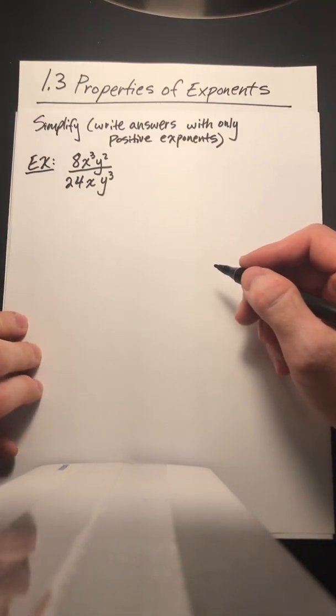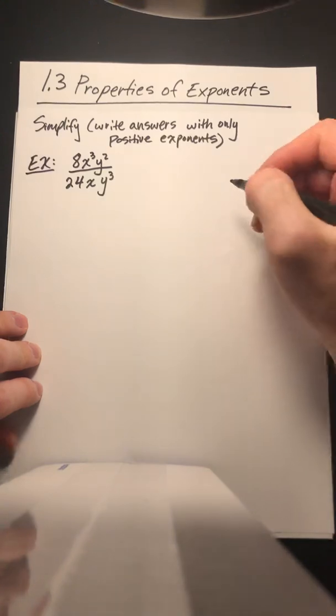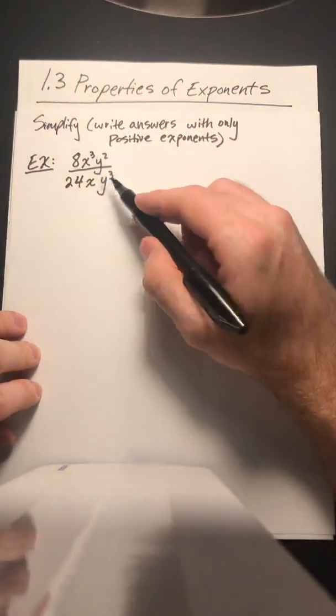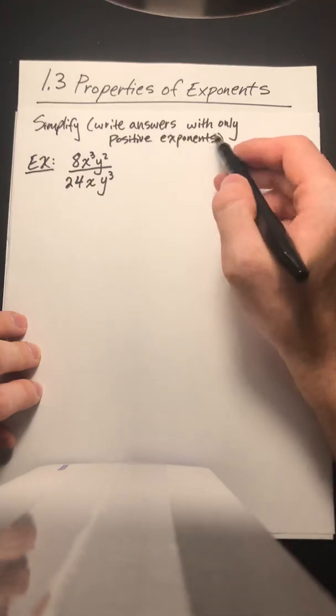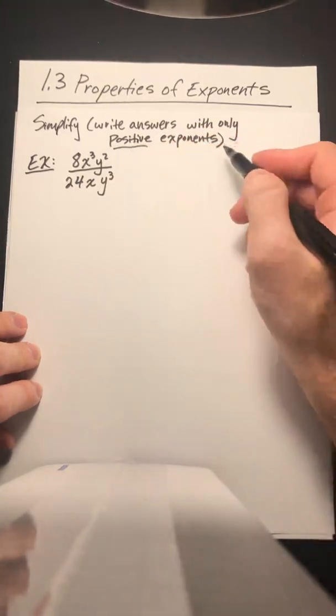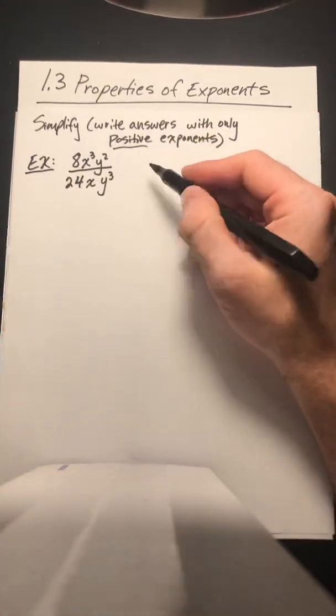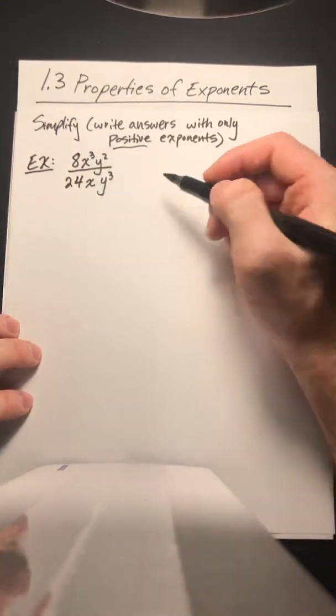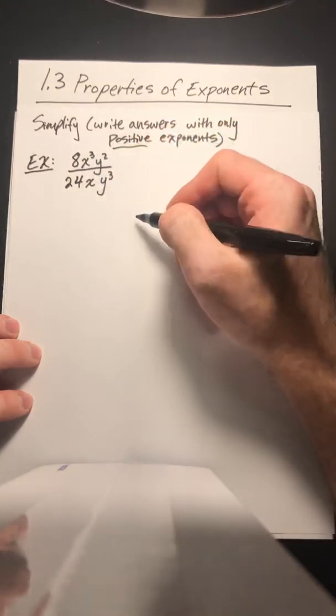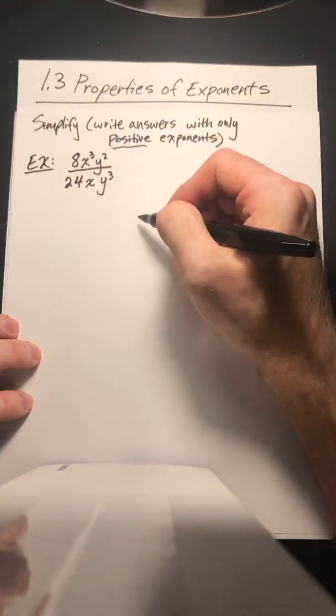So first problem comes from 1.3 properties of exponents. We're gonna simplify this expression and I want to write each answer with only positive exponents. So that's the key there when we simplify we want to have positive exponents. So that's the number that tells me how many factors of each term there are.